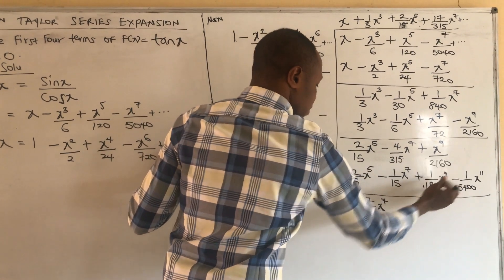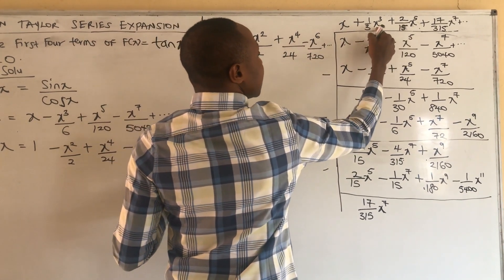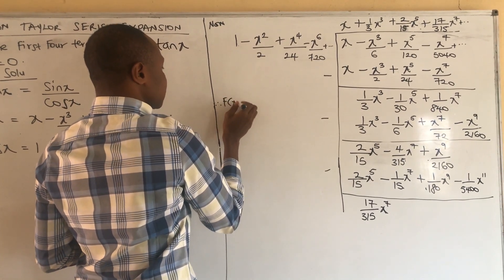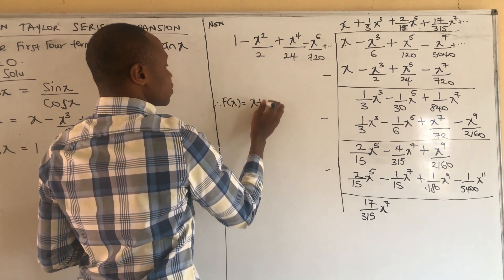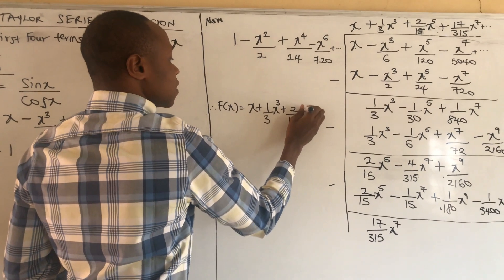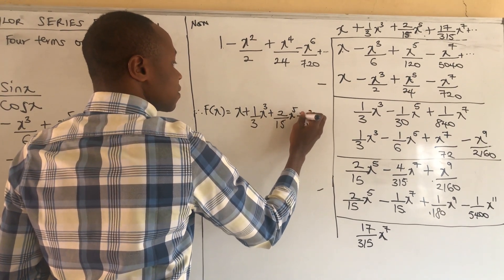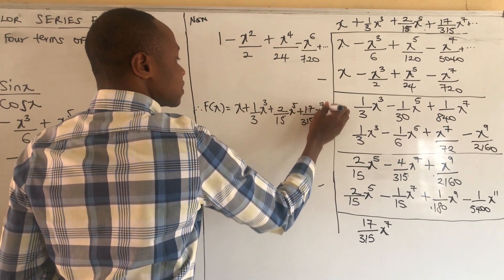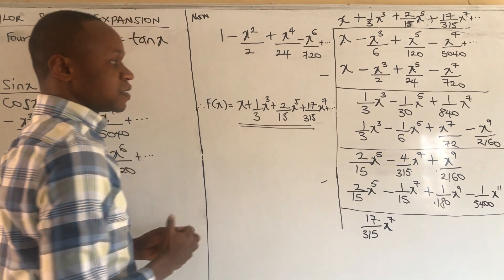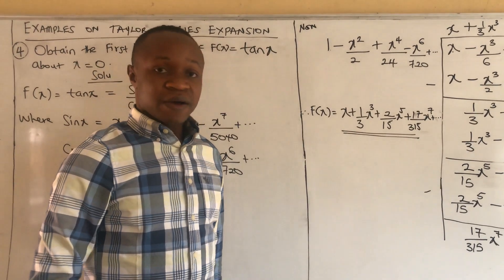Whatever follows will not affect the first four terms. So the first four terms of the expansion of tan(x) are: f(x) = x + (1/3)x³ + (2/15)x⁵ + (17/315)x⁷ + other terms. This gives the first four terms of the Taylor series expansion of tan(x) about zero.